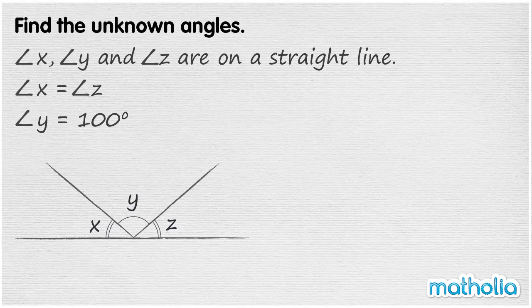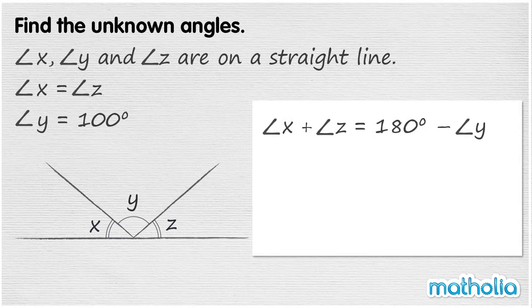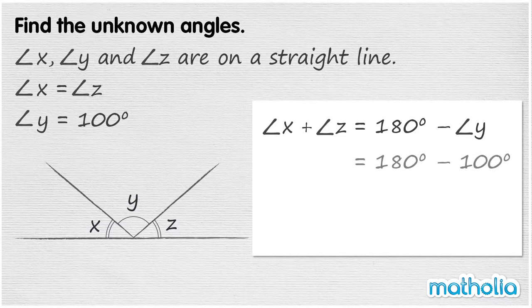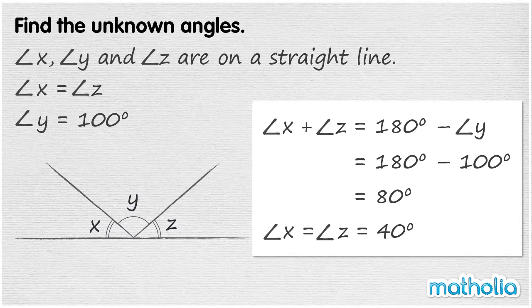The sum of angles X and Z is equal to 180 degrees minus angle Y. We know angle Y equals 100 degrees. So angle X plus angle Z equals 80 degrees. Angle X and angle Z are the same. So they are each equal to half of 80 degrees, which is 40 degrees. Angle X and angle Z are both equal to 40 degrees.